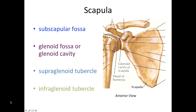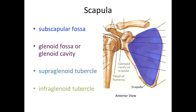Next we're going to look at an anterior view of our scapula. You can easily tell whether you're looking at an anterior or posterior view: if you're looking at a nice smooth surface with no spine of the scapula, you know you are looking at an anterior view. On this anterior view you will find the subscapular fossa — again, a shallow depression. Breaking down the words: sub meaning below, scapular meaning scapula — this is below the scapula if you are lying in the prone position.